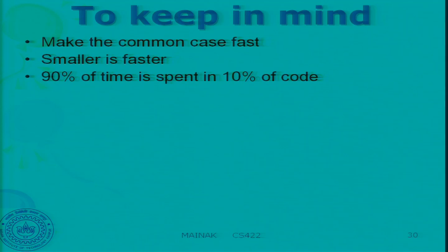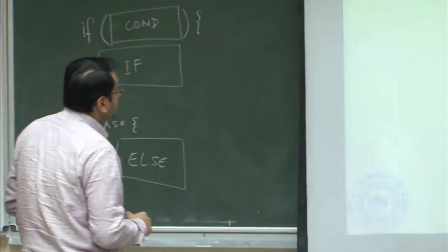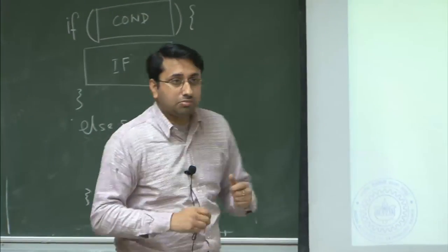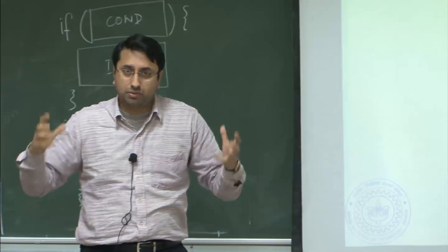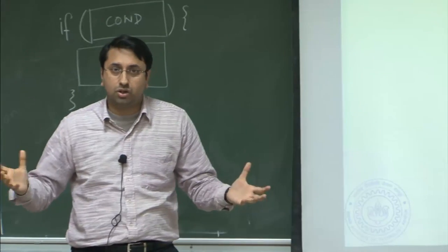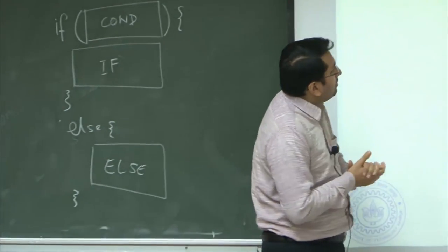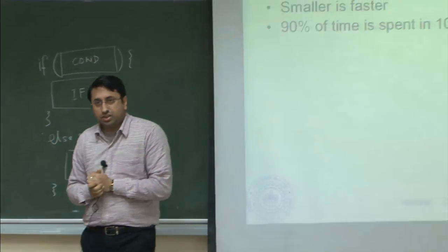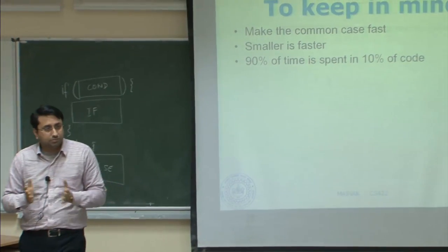If you have a small cache it is very fast, but as the cache size increases it becomes slower and slower. The same applies for logic circuits: small logic is fast, large logic is slow. And third: 90% of time is spent in 10% of code — that is essentially your code locality.